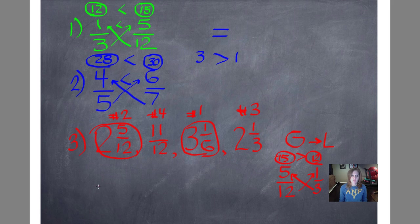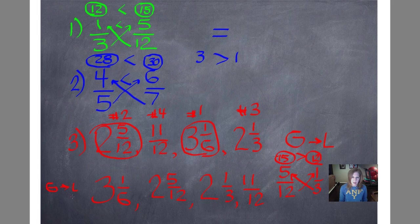So let's list them in order from greatest to least. Three and one-sixth — that's number one. Number two: two and five-twelfths. Number three: two and one-third — they were pretty close though. And eleven-twelfths. We know that had to be our smallest fraction because it's less than one, and all of these are greater — we've got twos and a three, all greater than one. Now I'm going to go back and check: did I put the biggest one first? Did I end up with the smallest one? I did. So I think I'm done.